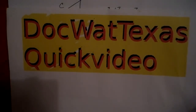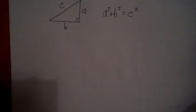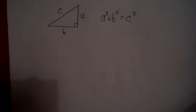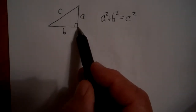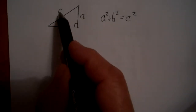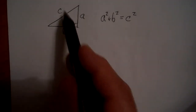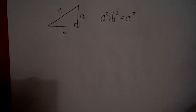In this DocWatt quick video, we're going to look at some applications of the Pythagorean theorem. Here's what we know: if we've got a right triangle — any right triangle — then there's a relationship between the two legs of the right triangle and the hypotenuse, that is, a squared plus b squared is equal to c squared.